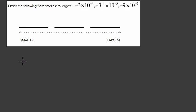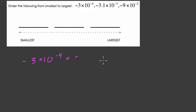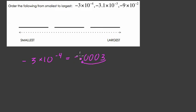So first, let's write them out in standard form. We've got negative 3 times 10 to the negative 4th. This means we've got a negative number — if we think about it starting at 3, we divide by 10 four times. So our decimal moves to the left four times from 3, and we have negative 0.0003.